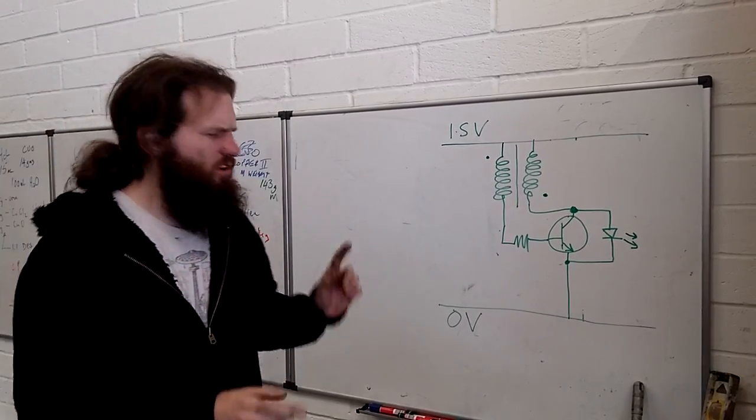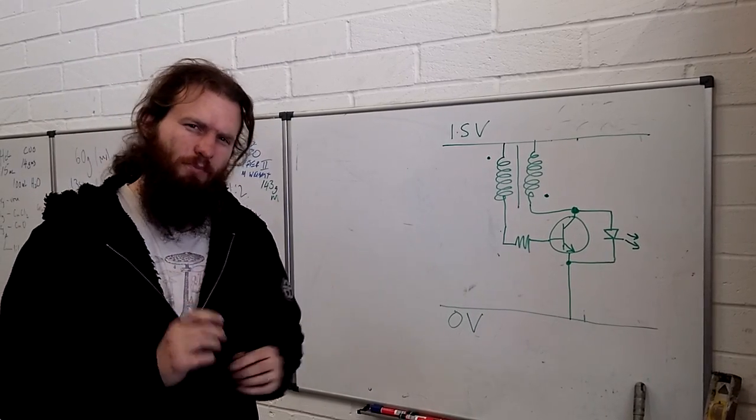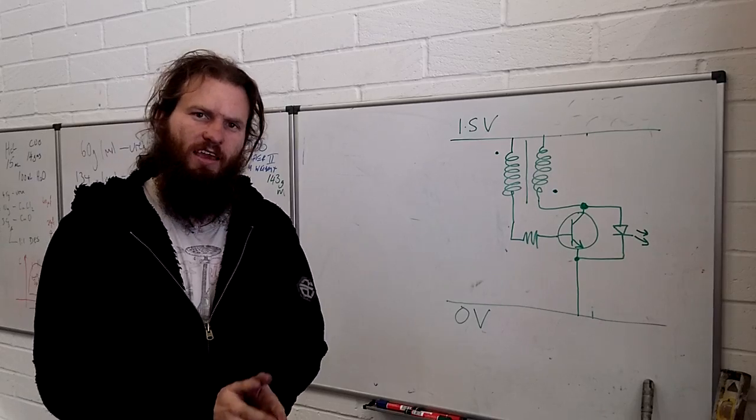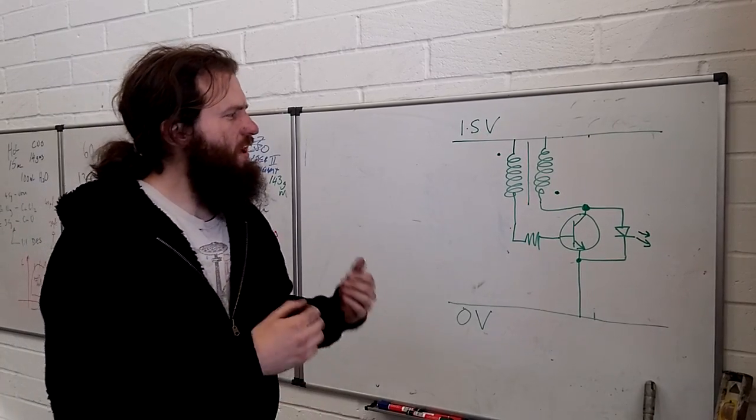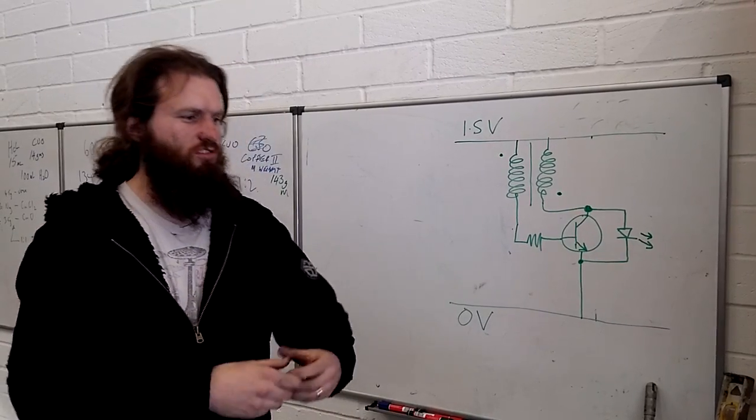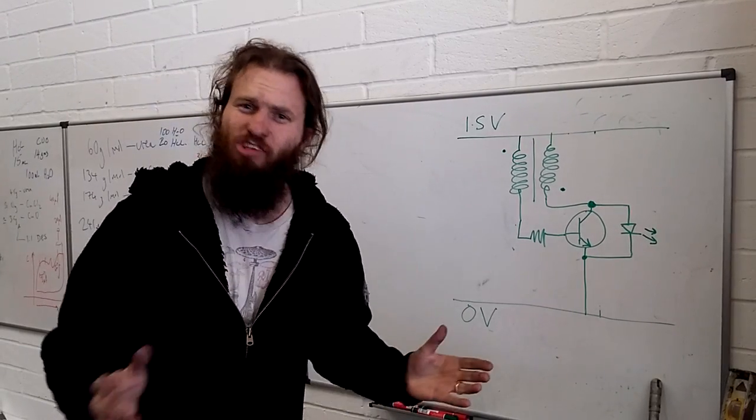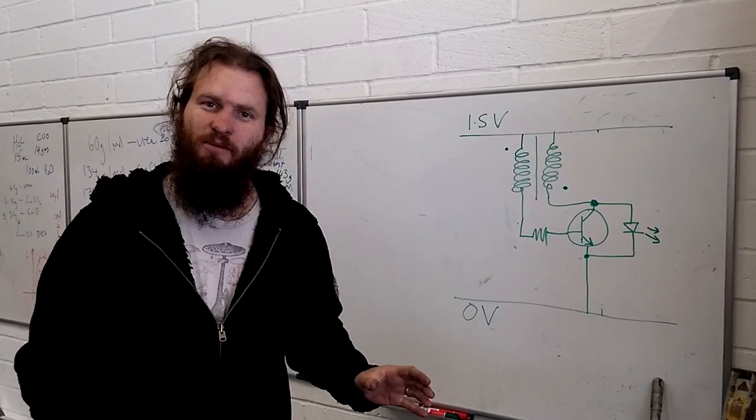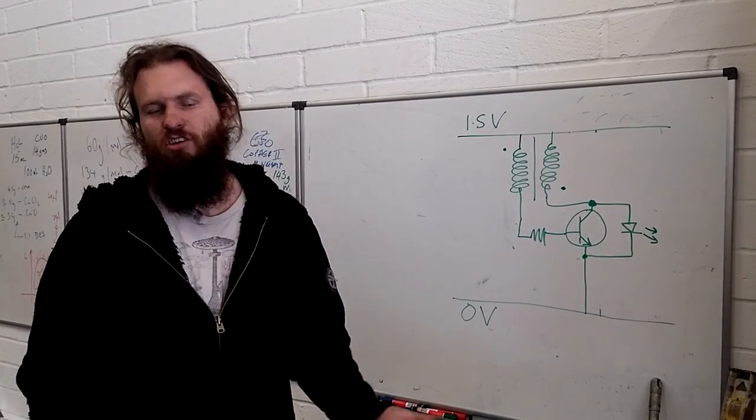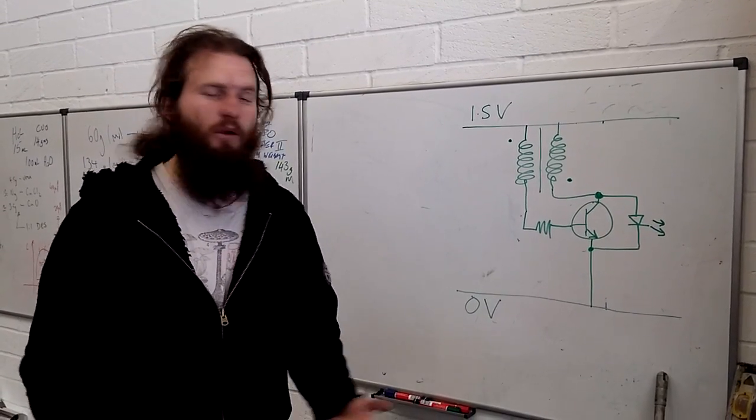Now, Rob might do a video later about how this interacts with the battery, how the back EMF interacts with the battery, because it's quite interesting. But one more crucial thing I want to say is that we haven't used anything special here. You'll see a lot of joule thief circuits where they use a toroid, they use some kind of perfect shape, but none of that's necessary. We've just used a nail here. A nail, a bit of wire, and a transistor, and an LED, and that's it. There's no mystery to it. You've seen how it works now.